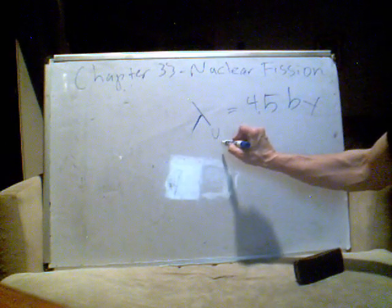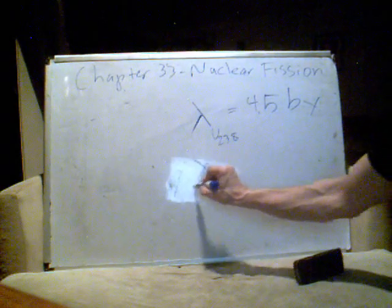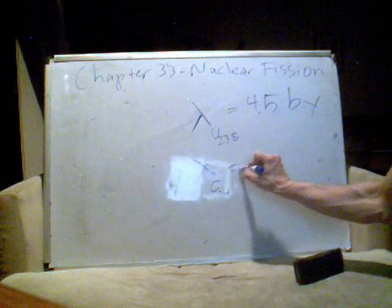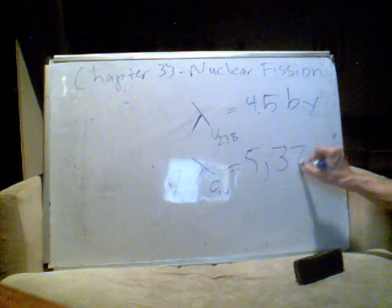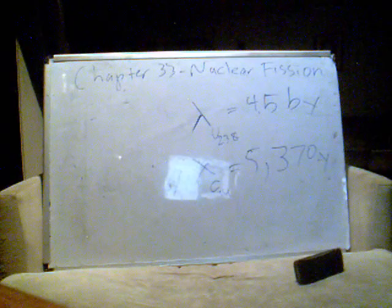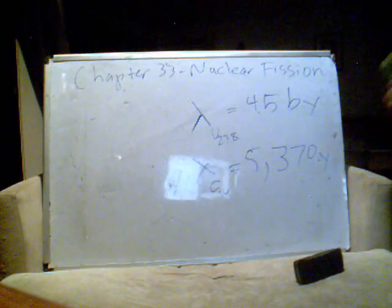This is actually, I think this is uranium-238. The half-life of carbon-14, on the other hand, is 5,000, I think it's 370 years. And this is the basis for carbon dating.